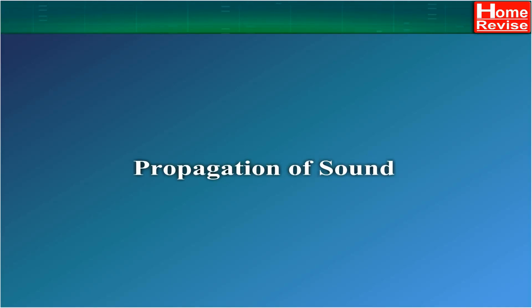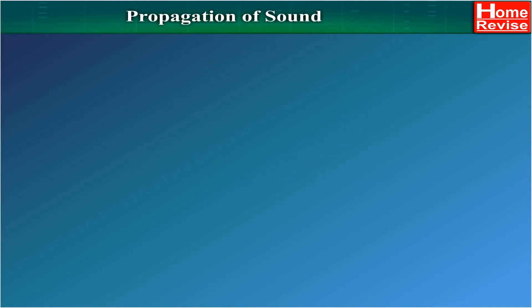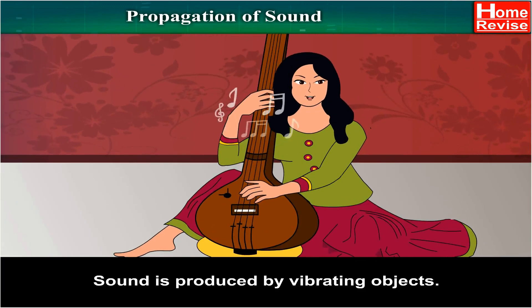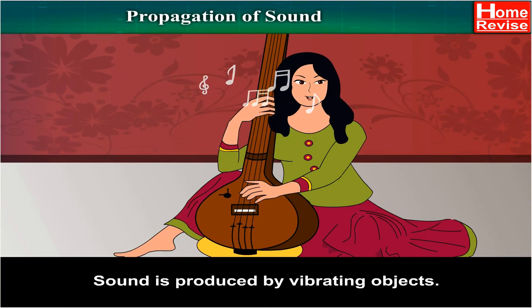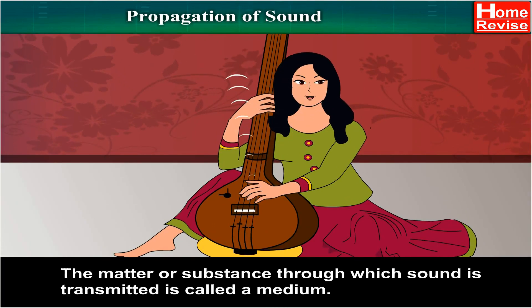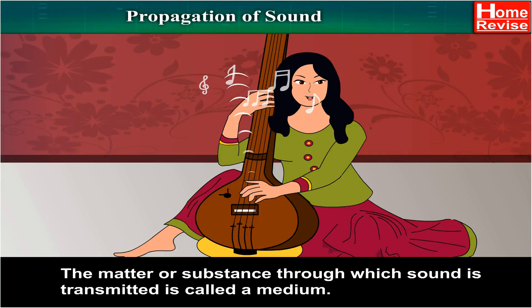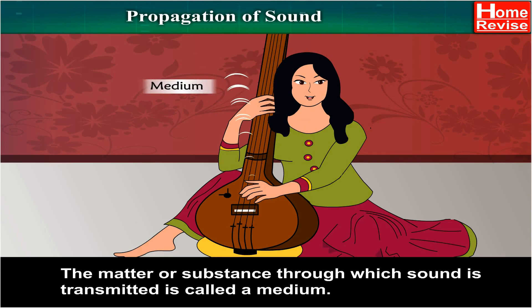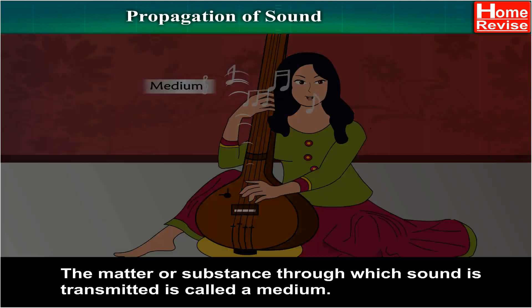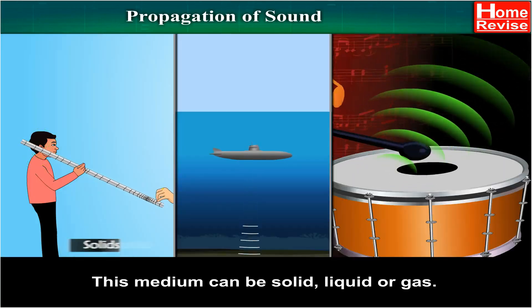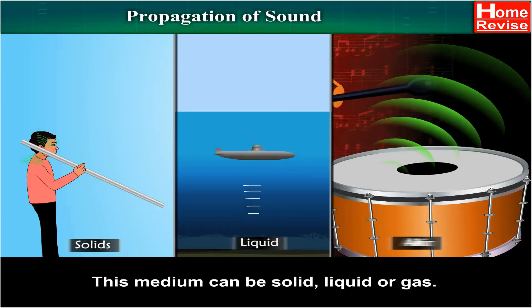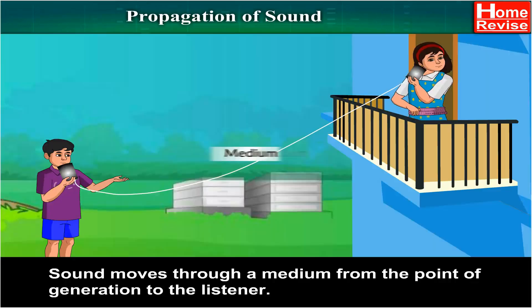Sound is produced by a vibrating object. The matter or substance through which sound is transmitted is called a medium. This medium can be solid, liquid, or gas. Sound moves through a medium from the point of generation to the listener.